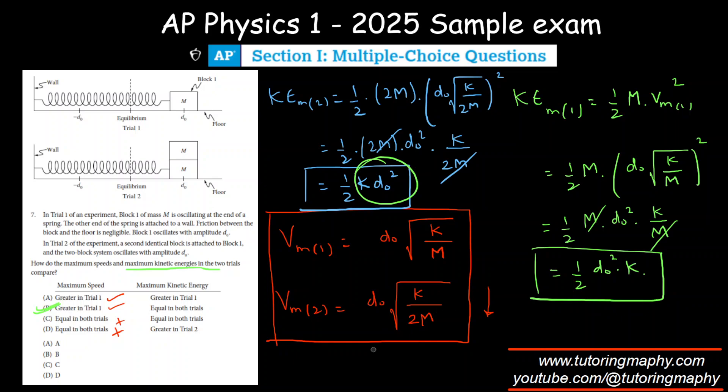So it has to be equal in both trials, so it has to be option B. We could have used another formula which might have been more straightforward, because the maximum kinetic energy in case of a horizontal spring-mass system is also given by half M omega squared x squared.